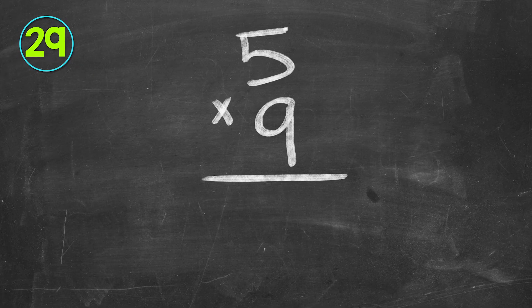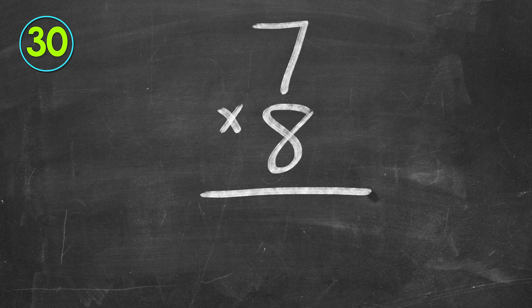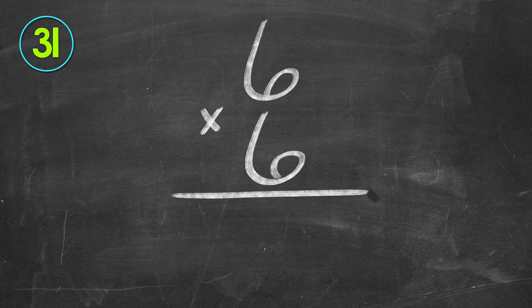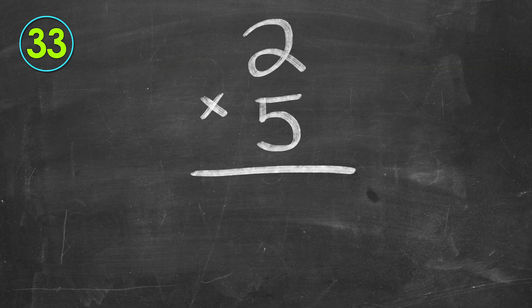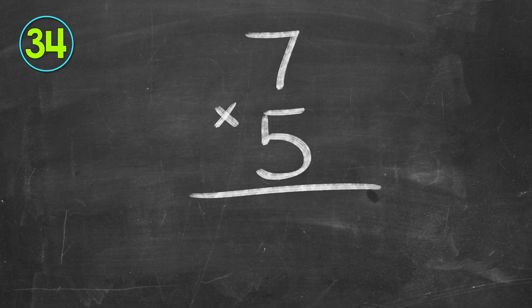Five times nine. 45. Seven times eight. 56. Six times six. 36. Nine times two. 18. 2 times 5. 10. 7 times 5. 35.